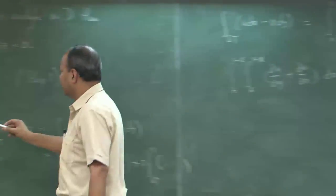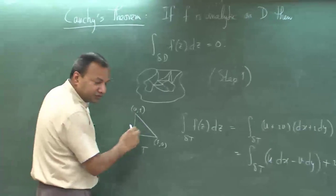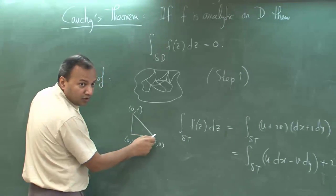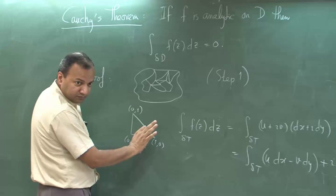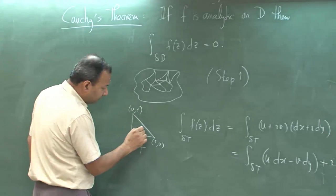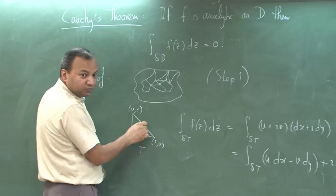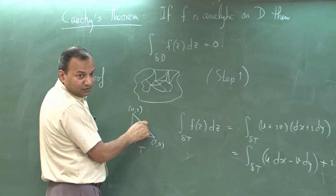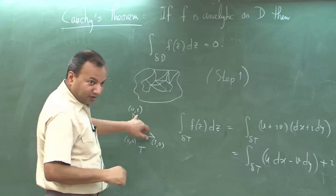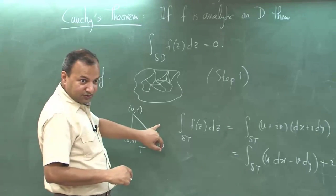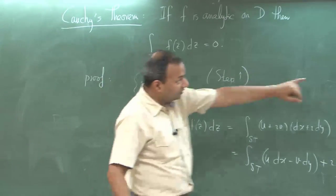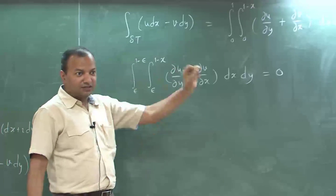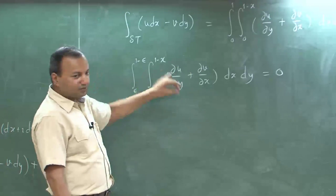Let us take the extreme case: let us take this triangle and assume that f is analytic inside but not at the boundary, but the only thing we can assume is that f extends smoothly to the boundary. The same objection you raised applies here for all three corners, yet because of continuity of these two functions at the boundary, this limit holds.